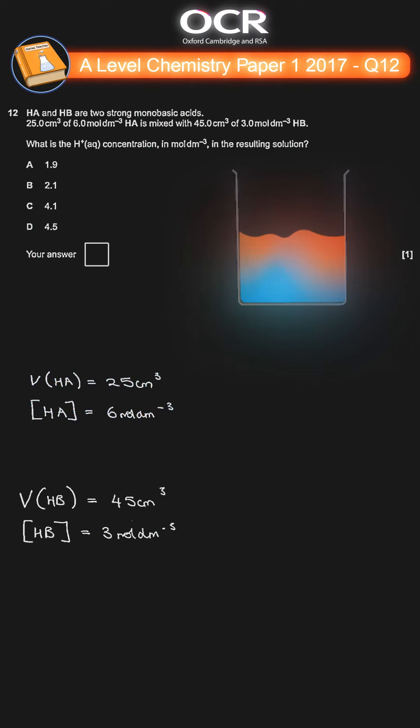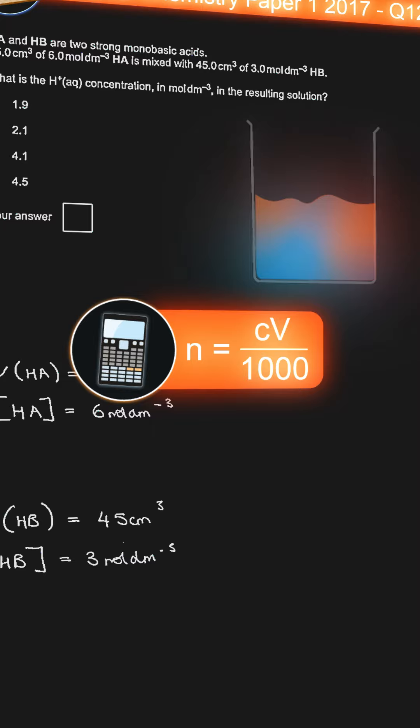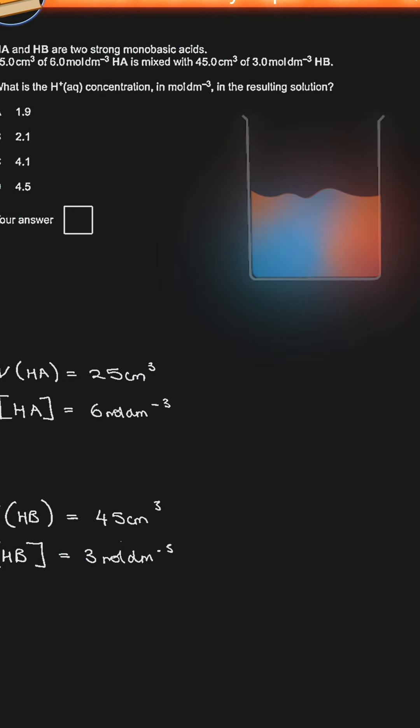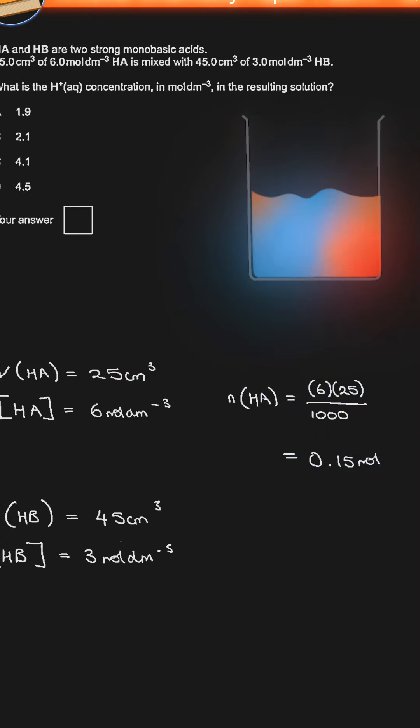First, we need to calculate the moles of HA and HB using the equation n equals CV over 1000. For HA, we get 6 times 25 over 1000 to get 0.15 moles, and for HB, we get 3 times 45 over 1000 to get 0.135 moles.